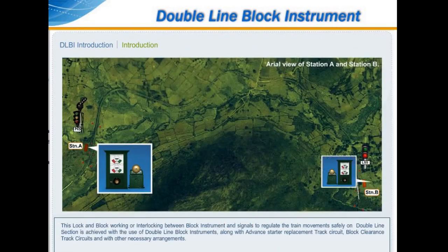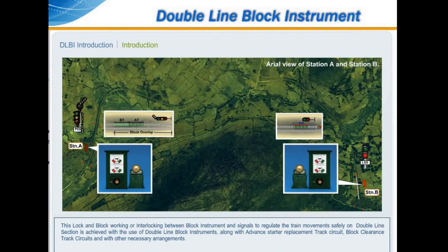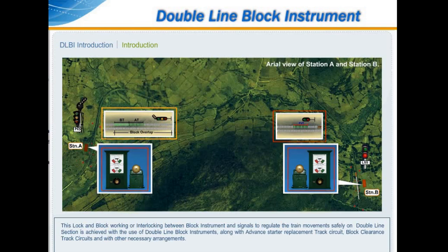This lock-and-block working, or interlocking between block instrument and signals to regulate train movements safely on double-line sections, is achieved through the use of double-line lock-and-block instruments along with advanced starter replacement track circuits, block clearance track circuits, and other necessary arrangements.